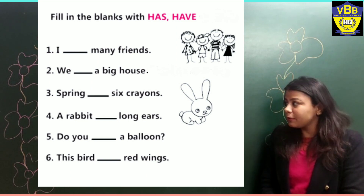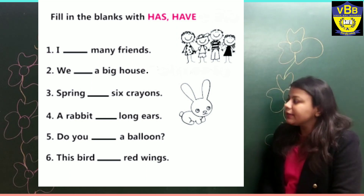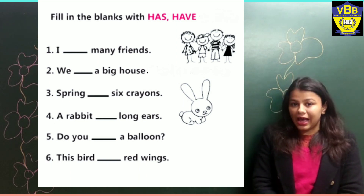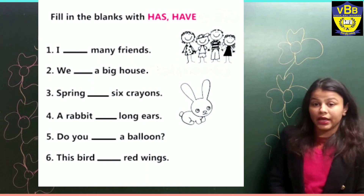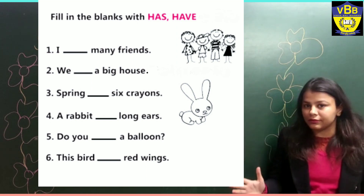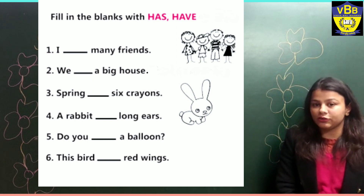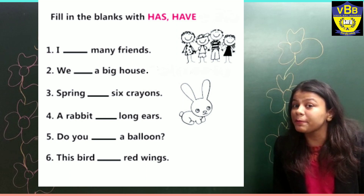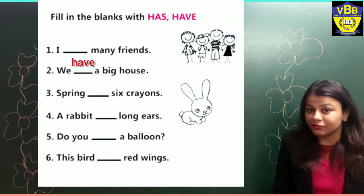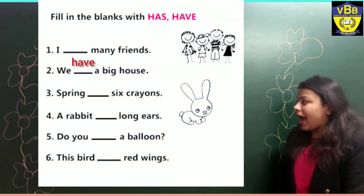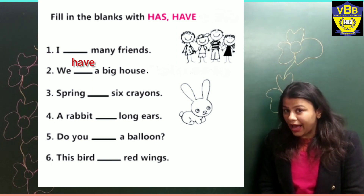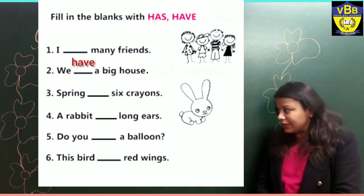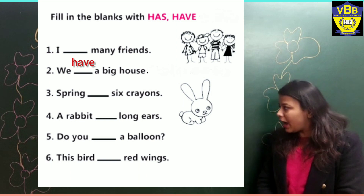Come to the second sentence: We dash a big house. Here we are talking about so many persons, that is why we will use have. Our correct answer is: We have a big house.